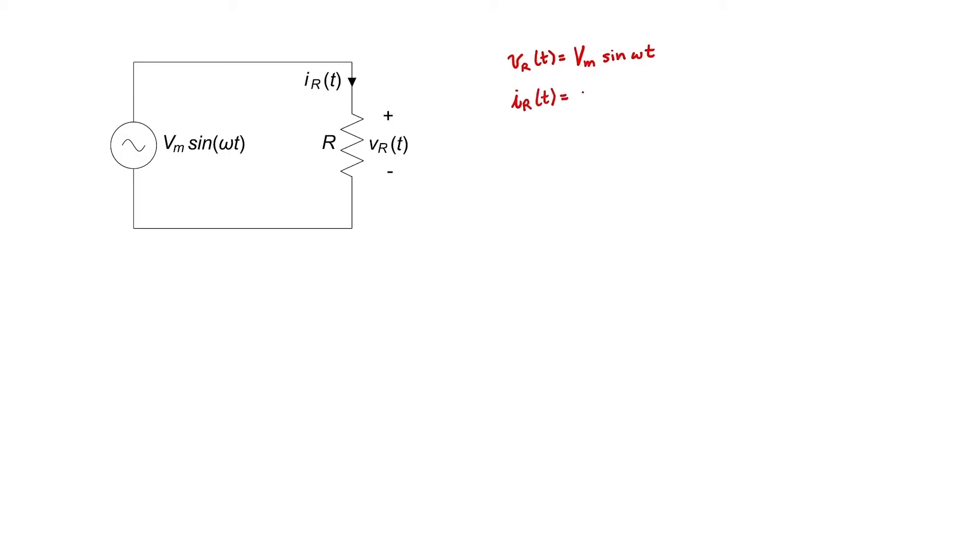The current through the resistor is just given by Ohm's law. Let's go ahead and plot these two waveforms, the voltage and the current. They're both sine waves, they're in phase with one another, and they have the same frequency. The maximum voltage is just Vm, and the maximum current is Vm over R, so I could define that as Im.